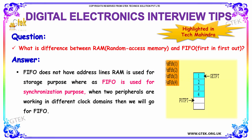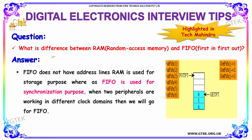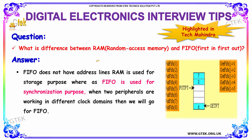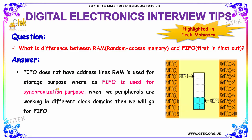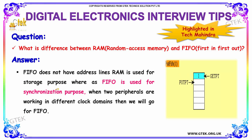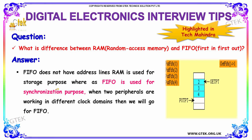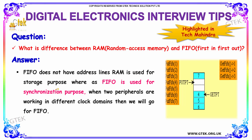The next question is: what is the difference between RAM and FIFO? RAM is random access memory; FIFO is first in, first out. FIFO does not have address lines, whereas RAM is used for storage purposes. FIFO is used for synchronization purposes — when two peripherals are working in different clock domains, we use FIFO. This question was highlighted in Tech Mahindra interviews.